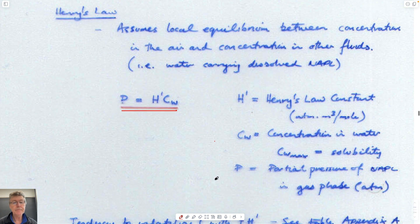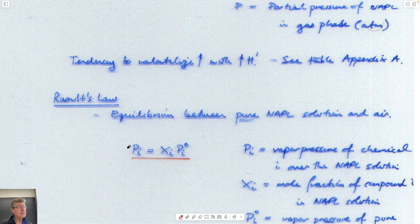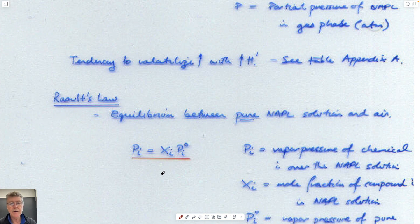We can also imagine that if we have a cocktail of components, then the saturation of a single component is controlled by Raoult's law — the molar fraction of that portion in the cocktail defines how much would be present in the gas phase relative to what's present in the cocktail. This would be the free-phase solubility in gas, reduced according to the proportion of that component in the cocktail. It's not a straight weight proportion, but a proportion based on molar concentration.